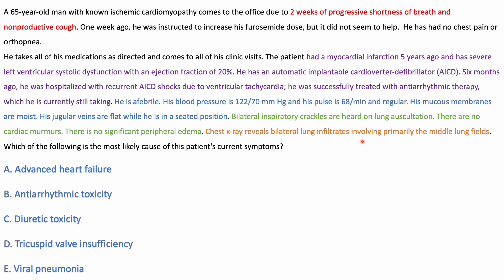Next question. The last two lines say chest X-ray reveals bilateral lung infiltrates involving primarily the middle lung fields. What is the most likely cause? From the answer choices: advanced heart failure — would pulmonary edema from heart failure be in the middle fields, or mainly basal? Antiarrhythmic toxicity — let's keep that in mind. Diuretic toxicity — I don't think any diuretic would cause pulmonary edema. Tricuspid insufficiency or viral pneumonia — let's consider those.